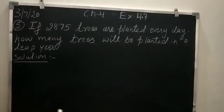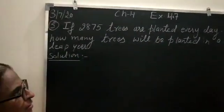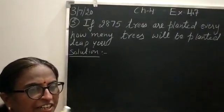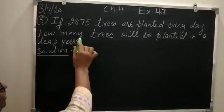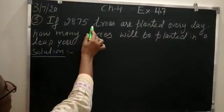So, in a leap year, first of all student, you have to know that how many days in a leap year, that is 366. So, trees planted in one day, that is 2875.